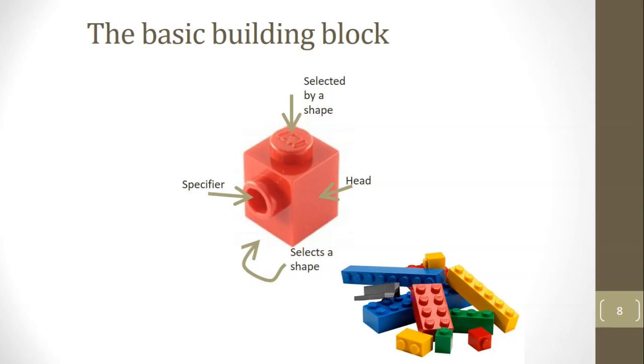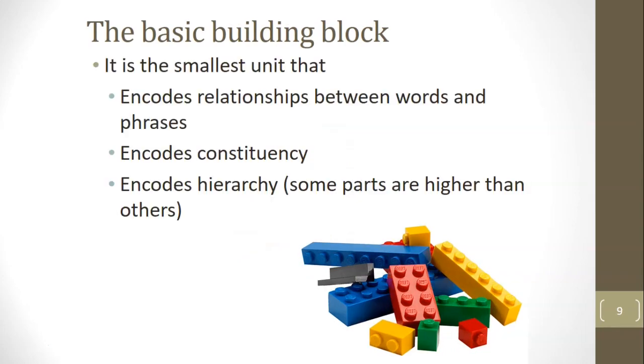So summing up then, we might want to assume this kind of X-bar structure because it's the smallest unit that encodes relationships between words and phrases, that encodes constituency, and also encodes asymmetric hierarchy.